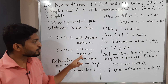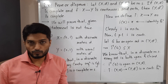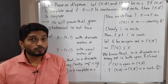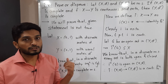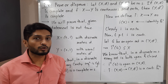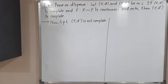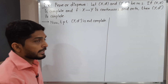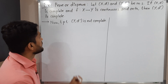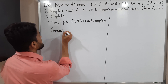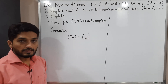To show that (Y, d') with the usual metric is not complete, we need to find a Cauchy sequence in (Y, d') that is not convergent there. Consider the sequence x_n = 1/n. We will now prove that it is a Cauchy sequence in (Y, d').